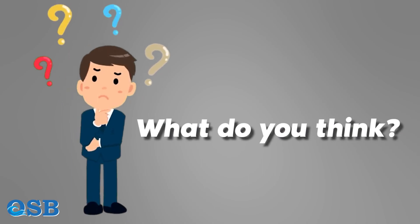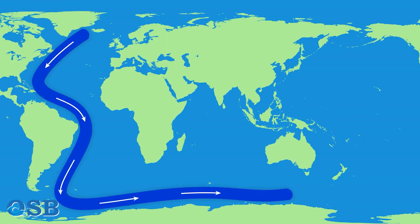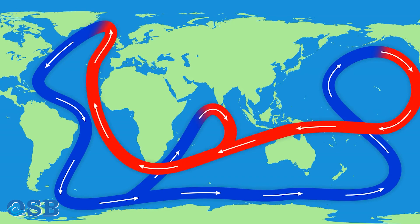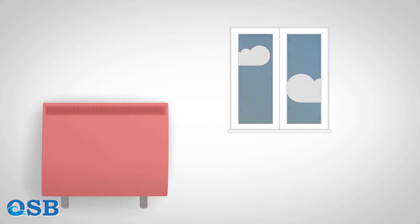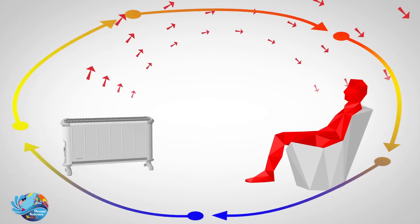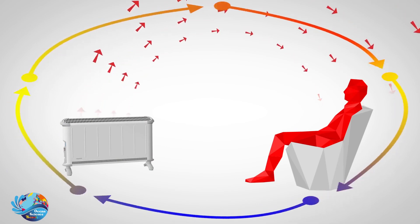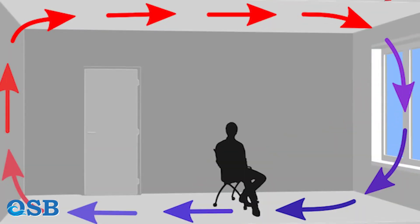To deeply understand these currents, we must first understand the thermohaline circulations in the oceans. Before that, we review our daily experience. In our room in winter, with the window open, the cold air moves from the bottom and the warm air moves near the ceiling, forming an air circulation. Cold air is near the bottom because it is heavier.